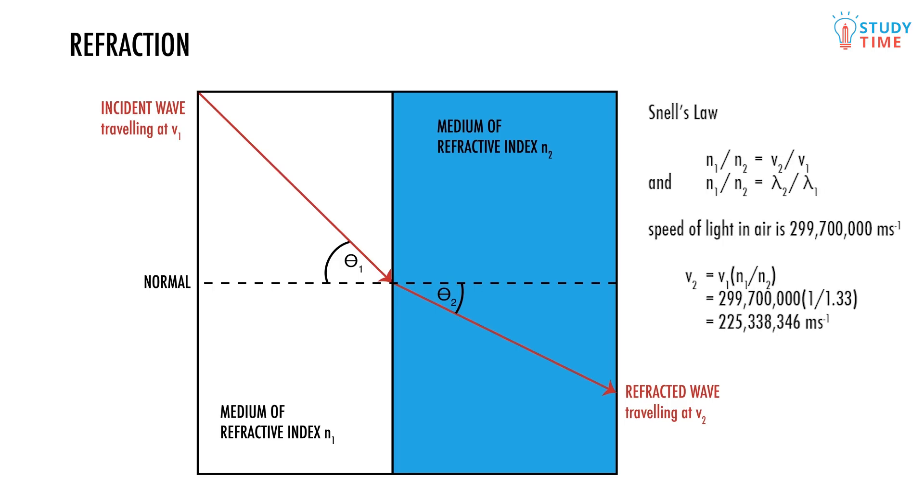If we know the refractive indices of the mediums and the velocity or wavelength of the wave in one of the mediums, we can figure out some more stuff using N1 divided by N2 equals V2 divided by V1, and N1 divided by N2 equals lambda 2 divided by lambda 1. For the above example, the speed of light in air is 299,700,000 meters per second. So to find out the speed of light in water, we rearrange the above equation to get V2 equals V1 times N1 divided by N2, equals 299,700,000 times 1 divided by 1.33, equals 225,338,346 meters per second.